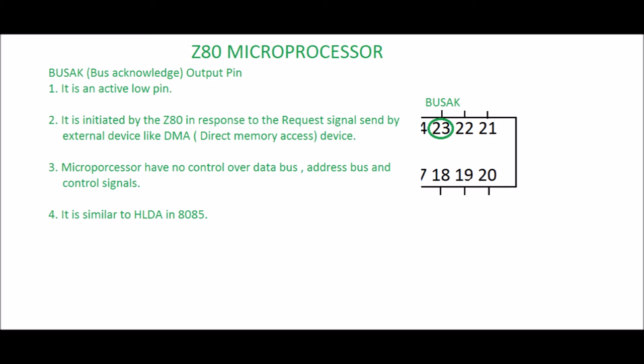Pin 23: BUSAK, Bus Acknowledge. It is an output pin and an active low pin. It is initiated by the Z80 in response to the request signal sent by an external device like DMA (direct memory access). Once bus acknowledge is initiated, the address bus, data bus, and control signals go to high impedance, meaning the microprocessor has no control over the bus. It gives all control to the requesting device, which is DMA. It is similar to HLDA in 8085.